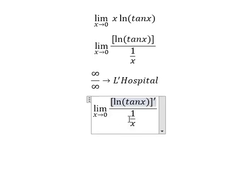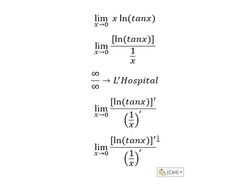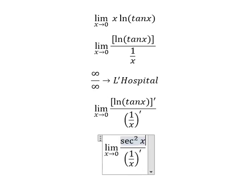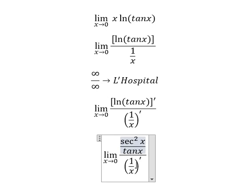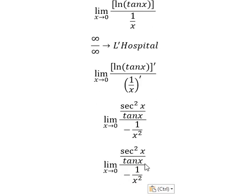If we do the derivative of this one, we have secant squared x over tan x. This one we have negative one over x squared.